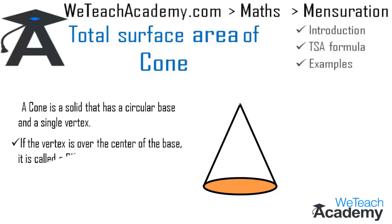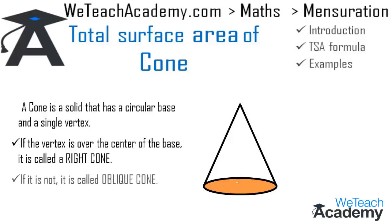If the vertex is directly over the center of the base, such a cone is called a right cone. If it is not over the center, then such a cone is called an oblique cone.